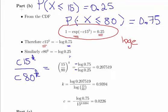Log of 0.75 divided by log of 0.25. We should have a minus sign on both sides but that just cancels out. So overall, we have 15 over 80 to the power of K, and that equals, with a bit of calculator work, 0.207519.